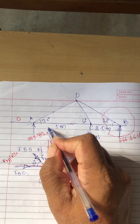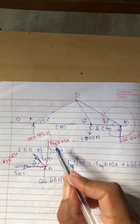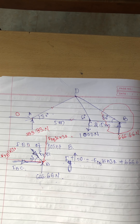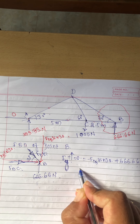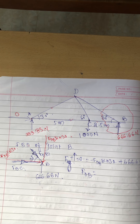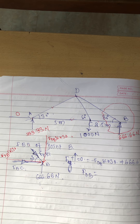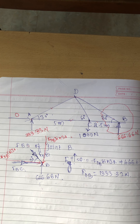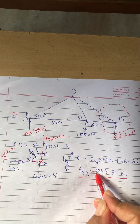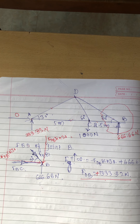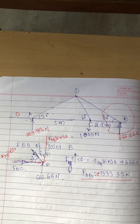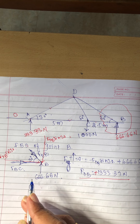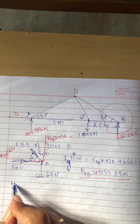Minus FDB sine of 30 plus 666.66 equals zero. Solve it and you get the value of FDB equal to 1333.33 Newton. You got one member force. Since the answer is positive, whatever direction you assumed is the correct direction. Now go for the remaining equation — total forces in x direction equal to zero. In the horizontal direction, the forces are FBC and the horizontal component FDB cos of 30.